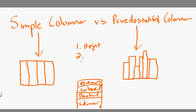The second difference between simple columnar and pseudo-stratified columnar epithelium is the location of the nucleus. Both of these are columnar because they have the column shape, but the location of the nucleus is different. In the simple columnar, the nucleuses are generally in the same location — at the base of the cell, nice and neat, all lined up together one by one.